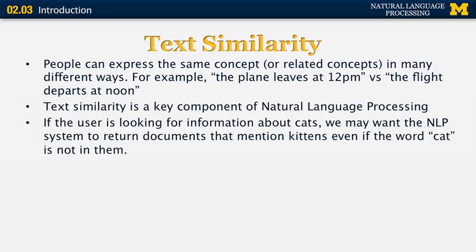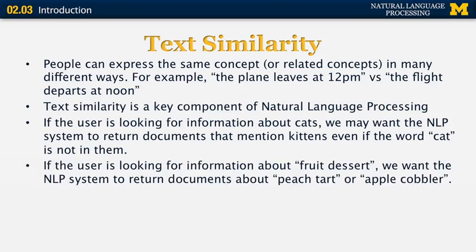Text similarity is one of the key components of natural language processing. For example, in an information retrieval task, if the user is looking for information about cats, we may want the system to return documents that mention the word 'kittens' and not the word 'cat'. So the document may not have any words in common with the query and still be related, because 'cat' and 'kitten' are similar words.